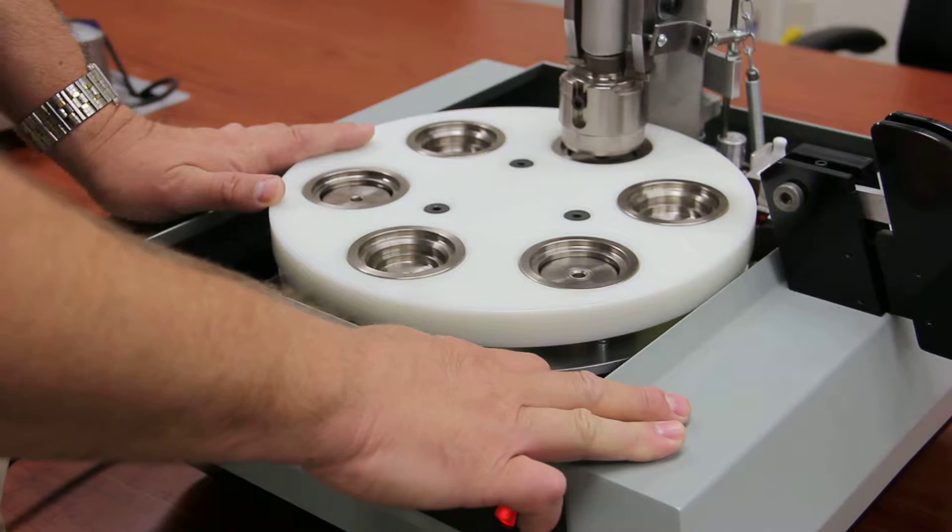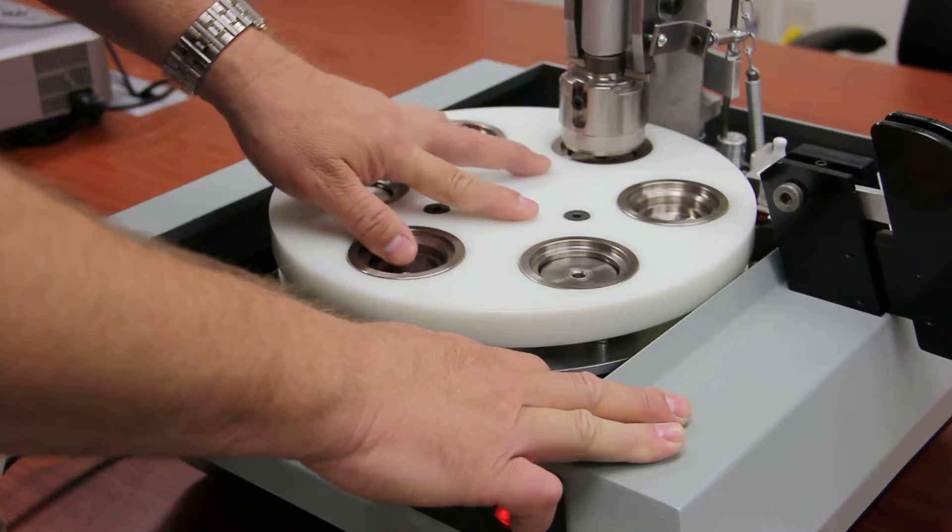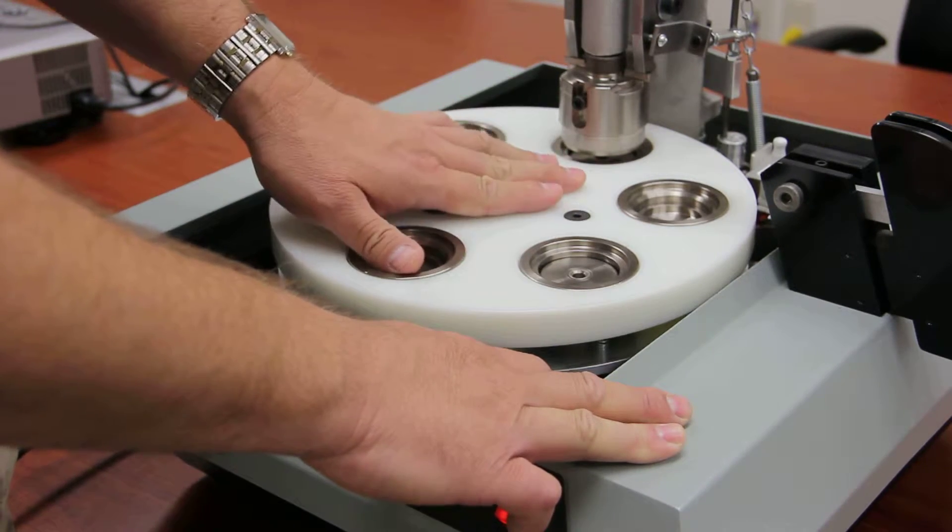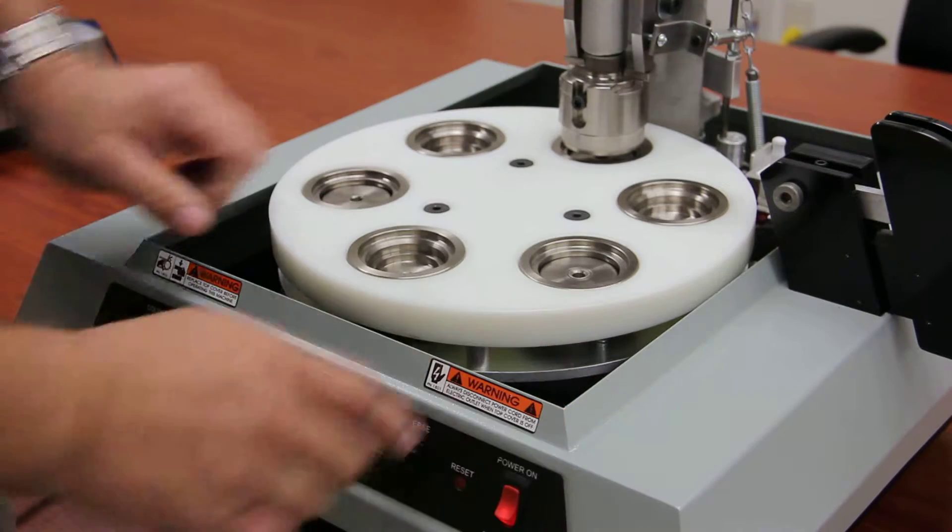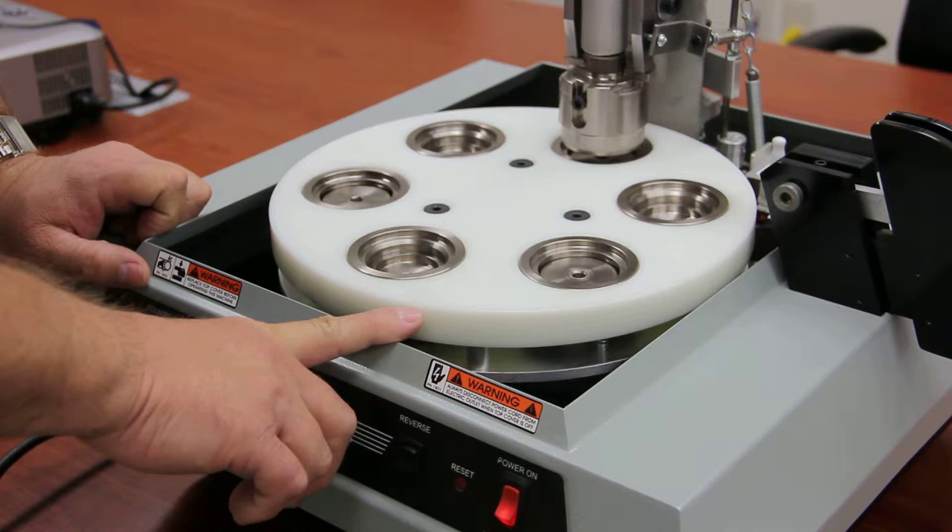The next thing you want to do is rotate or index the die set so one of these three screw holes is at 1 o'clock. To do this, pull up the white safety switch on the back of the machine, turn the power on, and step on the foot pedal.